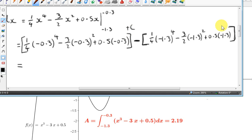We get a constant of integration. But as we saw previously, because we're subtracting, that constant disappears. Anyway, if you calculate all of this to two decimal places, you should get 2.19.